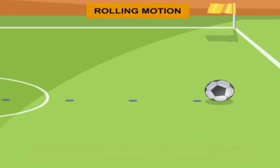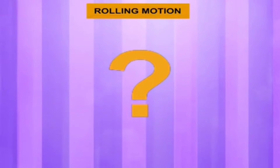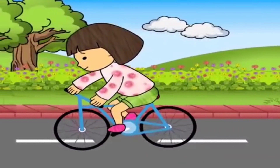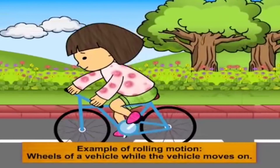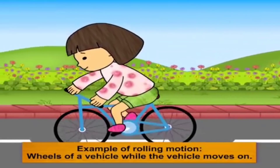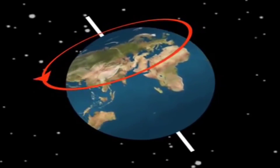A rolling motion is a combination of rectilinear and circular motion. Can you think of any other object which undergoes rolling motion? Yes — the wheel of a bicycle or any vehicle undergoes rolling motion while the vehicle moves forward.